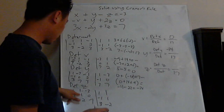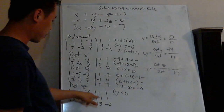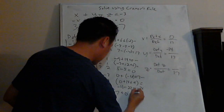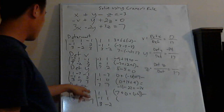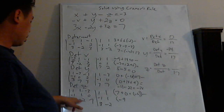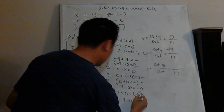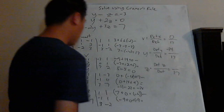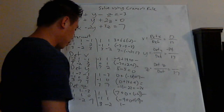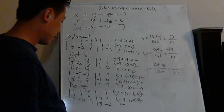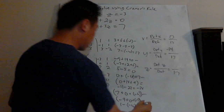Now for determinant z: 1 times 1 times 7 is 7 — wait, there's a 0 here. Then 1 times 0 times 3 is 0. Negative 3 times negative 1 times negative 2 is negative 6. Then subtract: 3 times 1 times negative 3 is negative 9. Negative 2 times 0 is 0. 7 times negative 1 times 1 is negative 7. So on top: 1 + 0 - 6 = negative 5... actually: negative 9 plus negative 7 is negative 16, and 1 minus negative 16 is 17. So determinant z is 17.